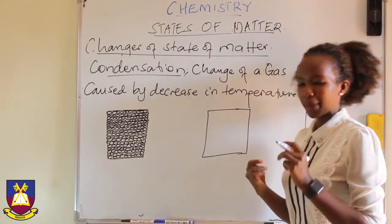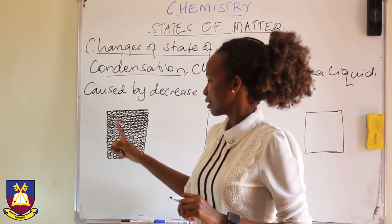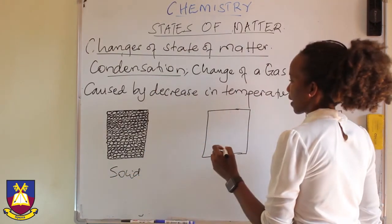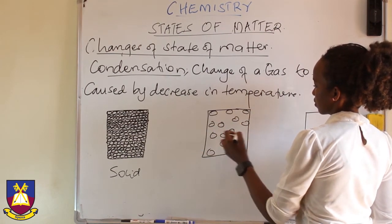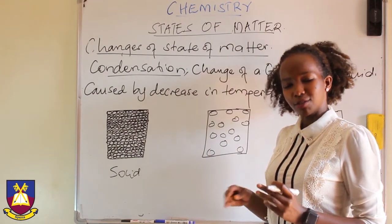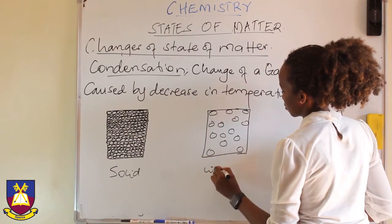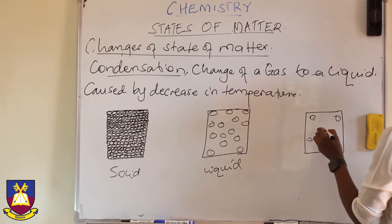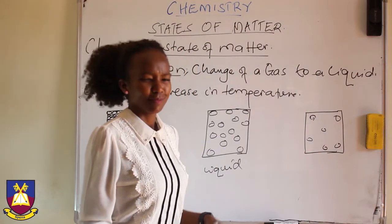In this diagram, the first box has particles that are closely packed together, with very small spaces between them, arranged in a regular pattern — this is a solid. The second box has particles that are close together but not too close, with bigger spaces — these represent a liquid. The third box has particles that are far apart from each other and irregularly arranged — obviously, gases.